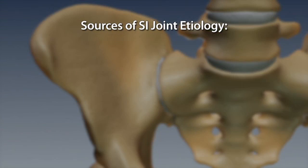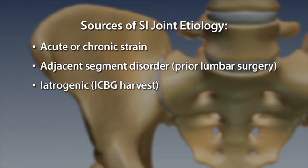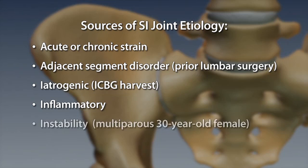Etiology of SI joint pathology comes from a variety of sources: acute or chronic strain, adjacent segment disorder, prior lumbar surgery, iatrogenic causes such as iliac crest bone graft harvest, and inflammatory or instability conditions, such as the multiparous 30-year-old female or prior trauma.